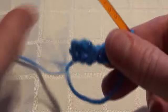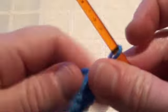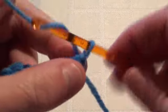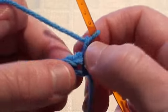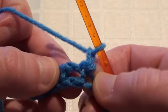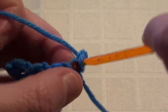And you turn your work. And for row two, we'll start off with a chain one. And then we'll do a single crochet into the first single crochet stitch here.